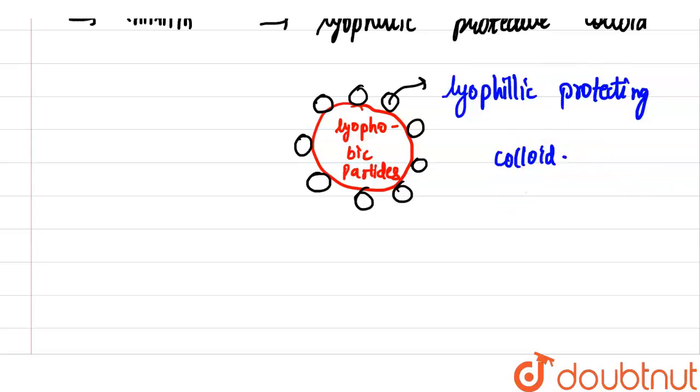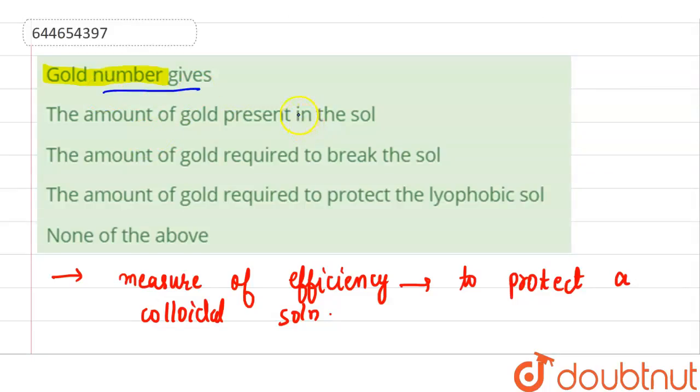So let us see the option: Gold number gives amount of gold present in the sol. This is not correct because it is the measure of the minimum amount of lyophilic protective colloid coated on lyophobic particle.